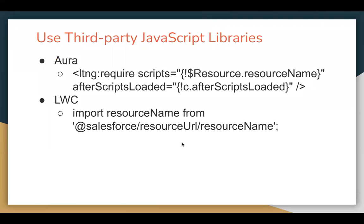Lastly, for third-party JavaScript libraries: in Aura you use ltng:require with scripts to reference a static resource. In LWC you simply import it using an import statement. That covers how to migrate from Aura to LWC. I discussed brief, common, and important features in this video. Follow all the videos to understand each feature in detail. Thank you.